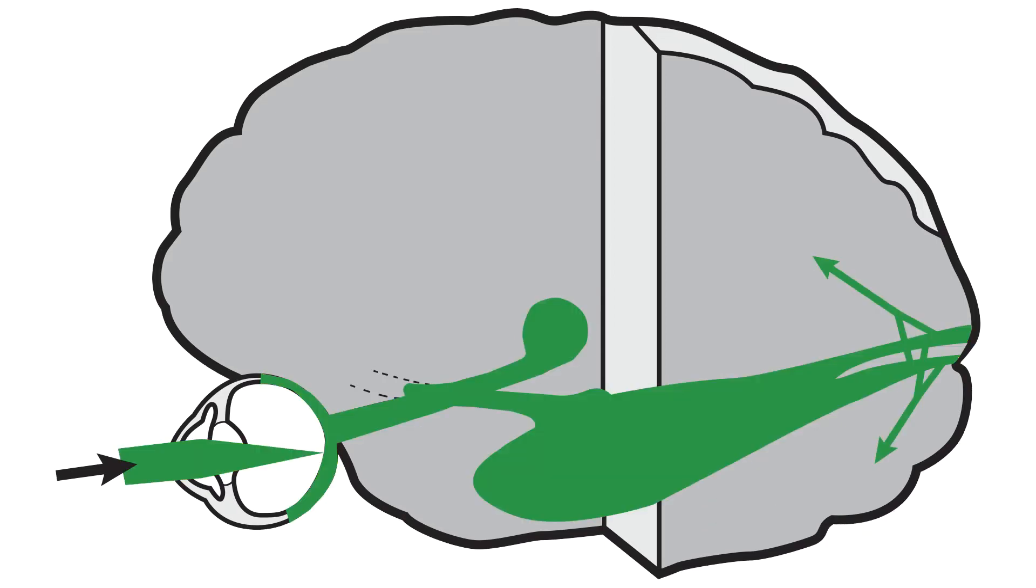The act of meaningful seeing requires that a visual message be sent from the front of the eyes to the back of the head. On the way, the message passes through the optical, retinocortical, and perceptual segments.